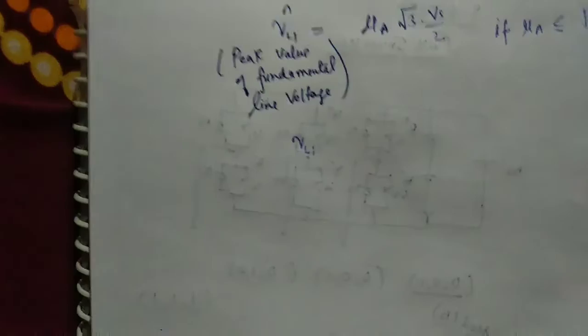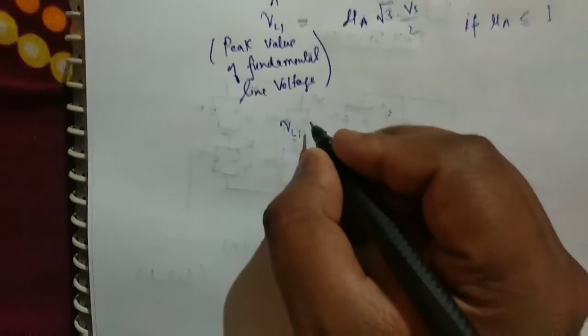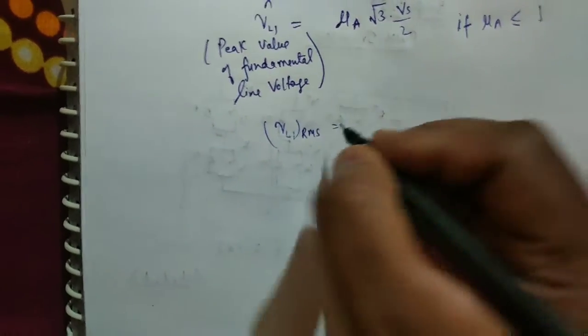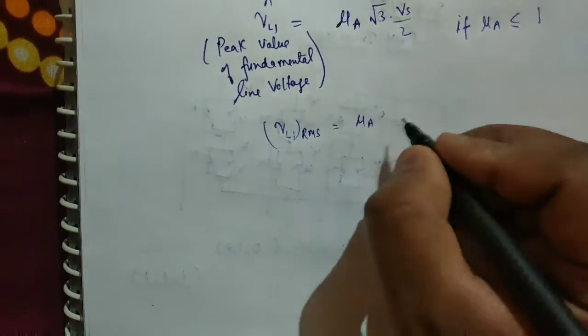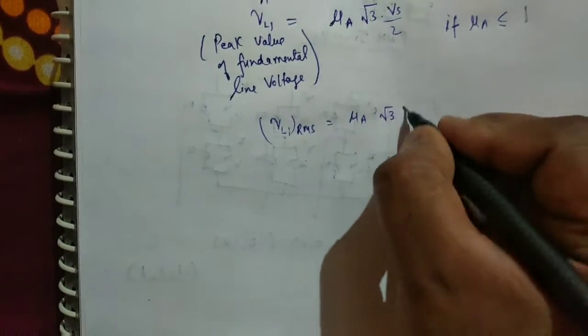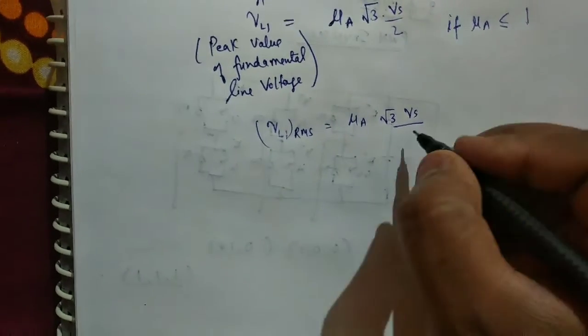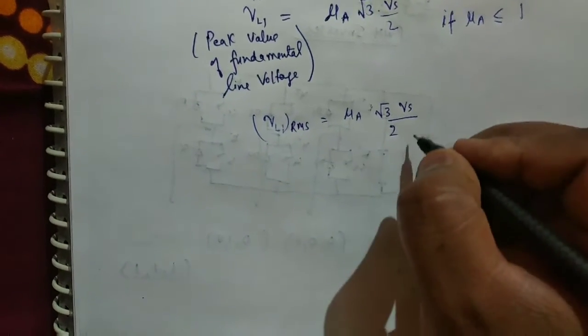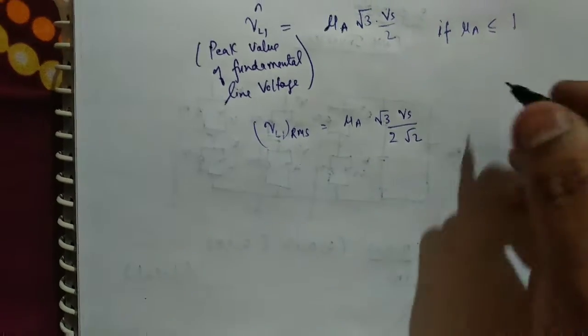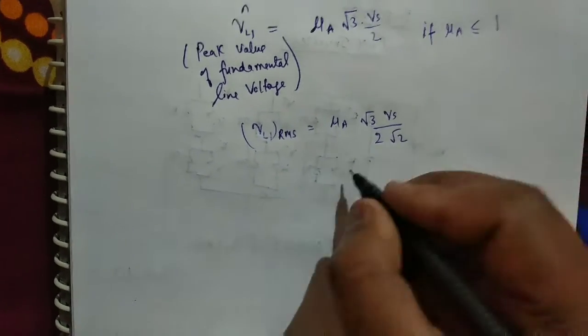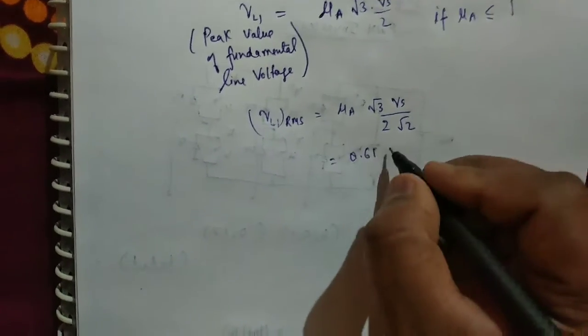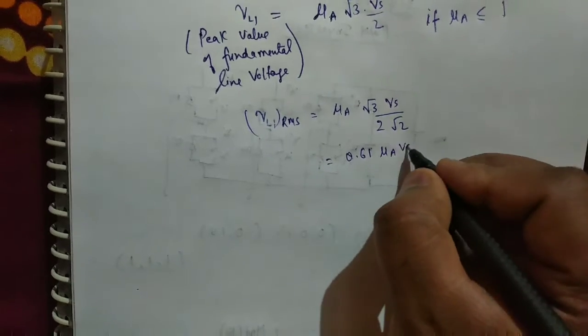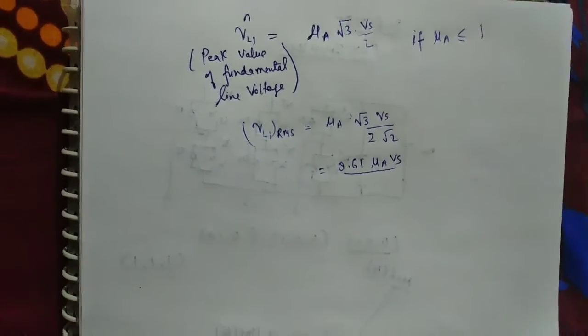So if μ_A is less than or equal to 1, in this region linear modulation will be there, and V_L1 RMS is μ_A √3 V_S by 2√2, so this is 0.61 μ_A V_S.